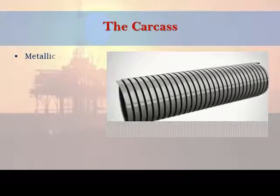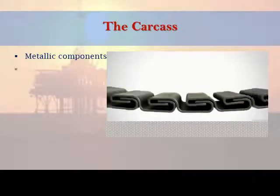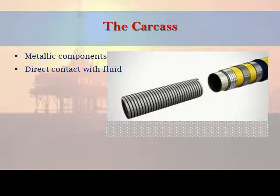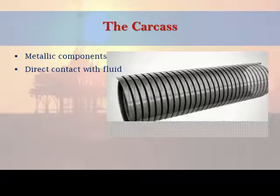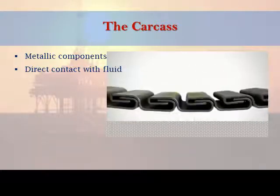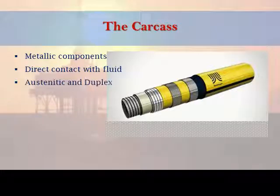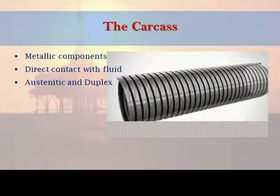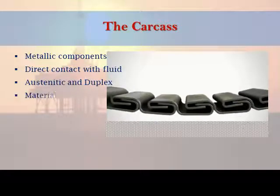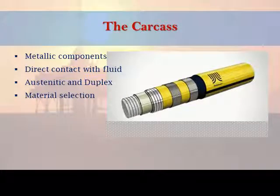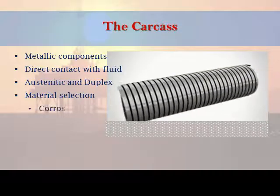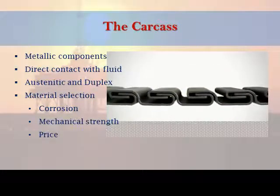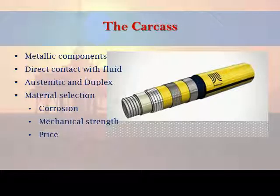The carcass is the innermost layer of a pipe and the only metallic component that is in direct contact with the fluid in the bore. The material must be compatible with the chemical constituents of the transported liquids or gases. A wide variety of austenitic and duplex stainless steels have been used as carcass materials, particularly for unbonded flexible pipes. The main drivers for selection of material for carcass are corrosion resistance to operating environment, mechanical strength, and price.